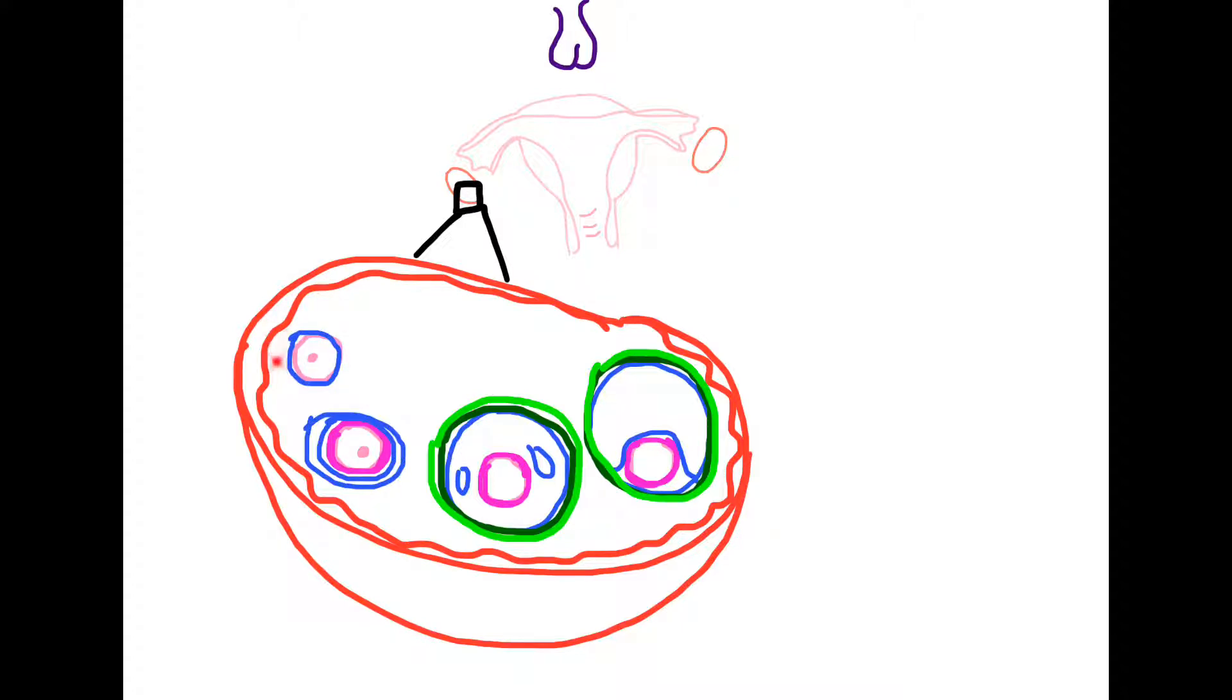The primordial follicle contains an ova which has its chromosomes arrested in prophase 1 of meiosis 1. This primordial follicle then changes into a primary follicle where it develops a zona pellucida and multiple layers of follicular cells which are then called granulosa cells.